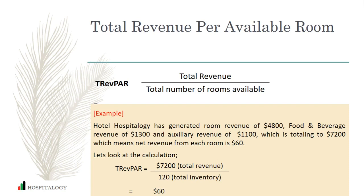This total revenue also includes if the guest went to the spa, any other ancillary revenue, and even the minibar. So in this case, the hotel has generated $7,200 as total revenue and the hotel has 120 rooms, which means each room has generated revenue of $60.